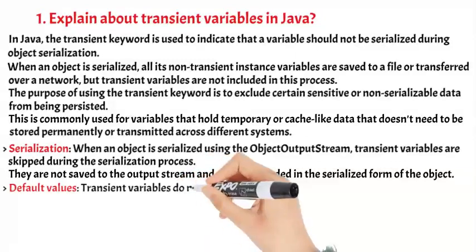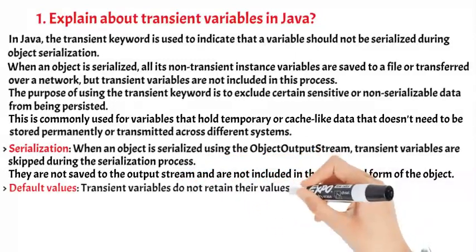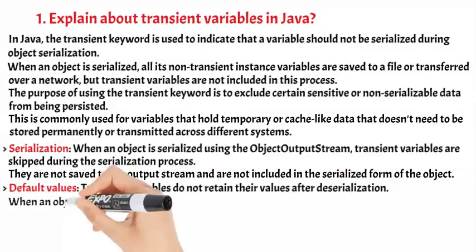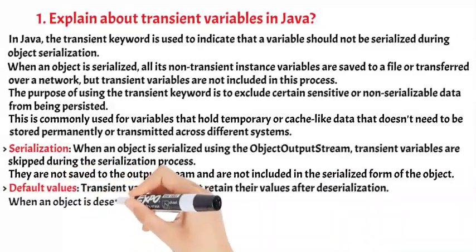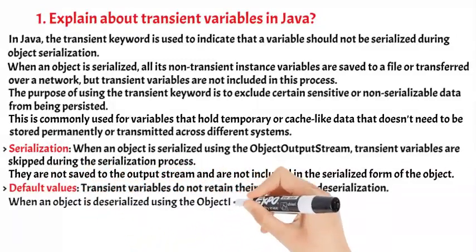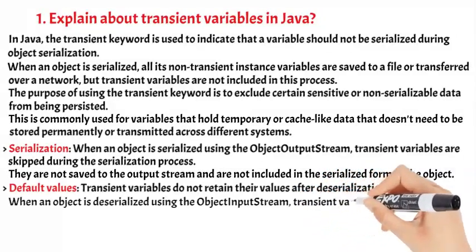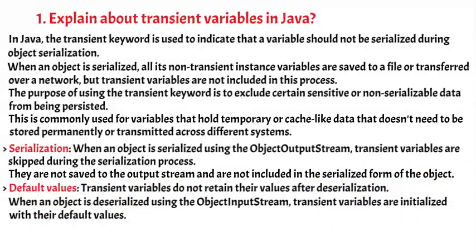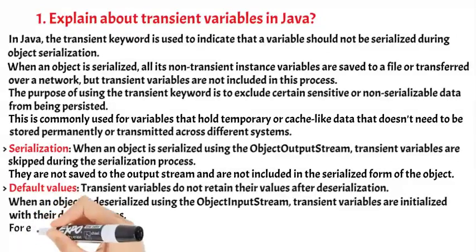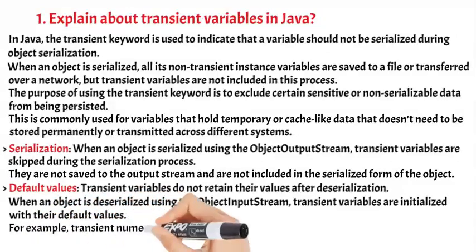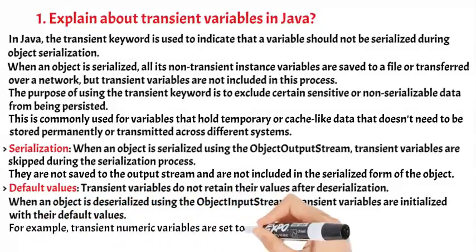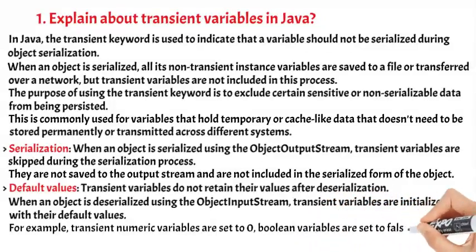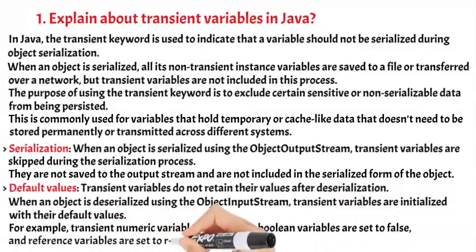Transient variables do not retain their values after deserialization. When an object is deserialized using the ObjectInputStream, transient variables are initialized with their default values. For example, transient numeric variables are set to 0 and boolean variables are set to false.